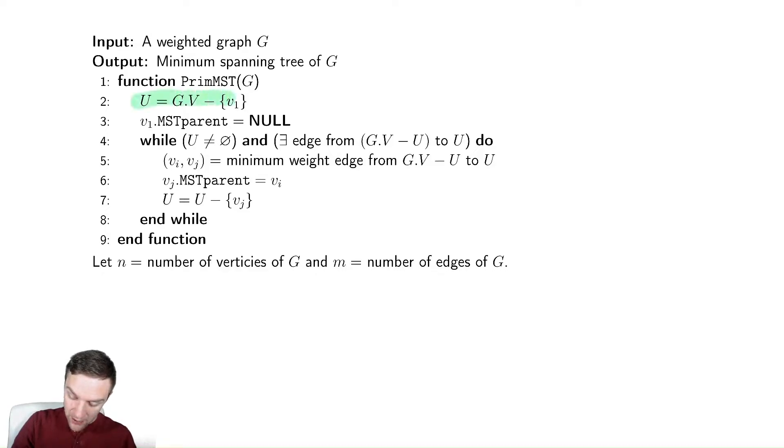These lines at the top of the code are all simple assignments. You could argue maybe this line here takes time proportional to the number of vertices in order to copy all of the data. So let's say that the runtime here is cn.